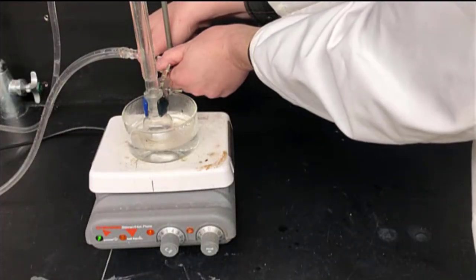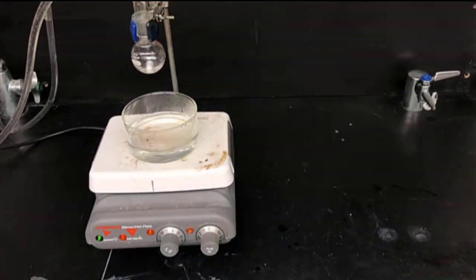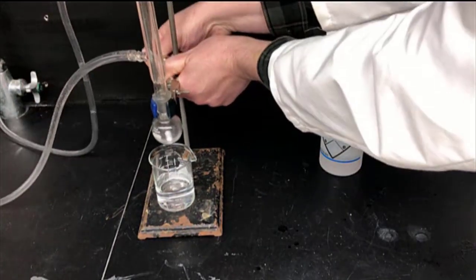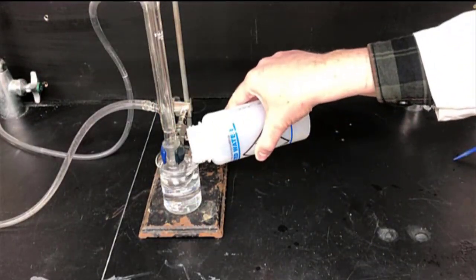After refluxing for one hour, remove the heat source by taking away the hot water bath, and then we can cool it down to room temperature fairly quickly by replacing the hot water bath with a room temperature water bath. This will get the reaction temperature down to near room temperature very quickly.